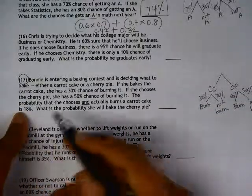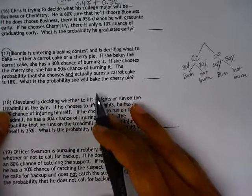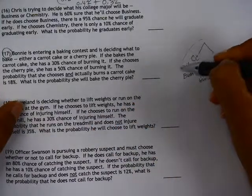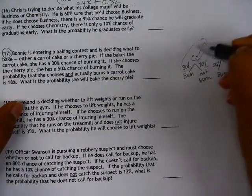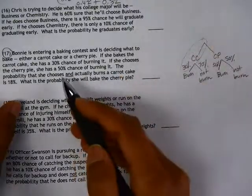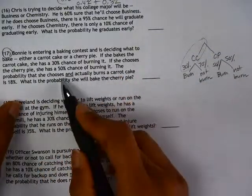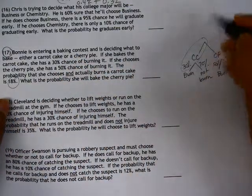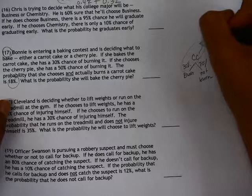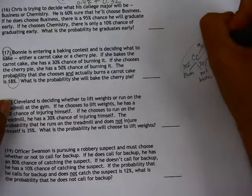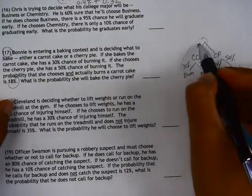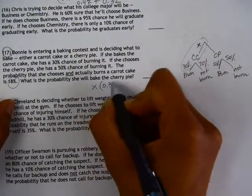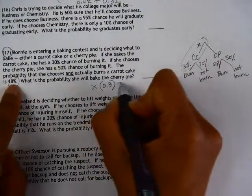The probability that she chooses and burns a carrot cake, so here we have this path of her making a carrot cake and burning it. The probability of choosing and actually burning a carrot cake is 18%. So what's missing here is we don't know what this probability was of her baking the carrot cake in the first place, but we do know that if she makes the carrot cake and she burns it, that probability is 18%.